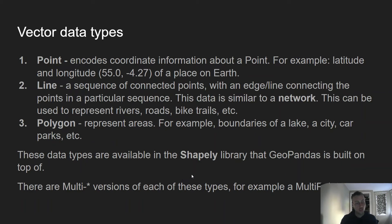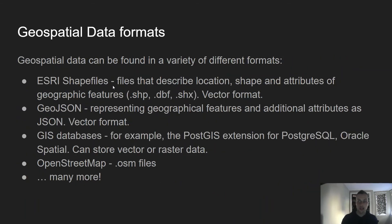It's also worth noting that you can have multi-lines, multi-points, and multi-polygons. These are for when you have a particular observation consisting of multiple points, lines, or polygons. They just extend the three core types, which are the main ones to understand.